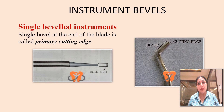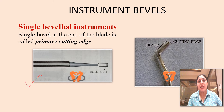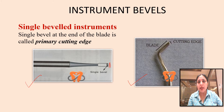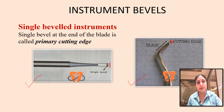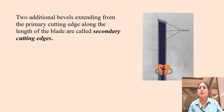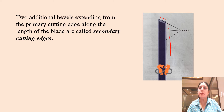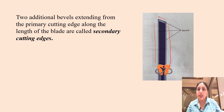Let us discuss the instrument bevels. Presented here are two instruments: the straight chisel and the enamel hatchet. Both these instruments bear a single bevel at the end of their blade, and this single bevel is the primary cutting edge — such instruments are called single beveled instruments. In case there are two additional bevels extending from the primary cutting edge along the length of the blade, we call them secondary cutting edges. These allow cutting in three directions as per the requirement and they improve the cutting efficiency of the instrument.